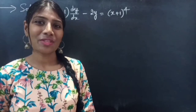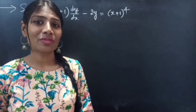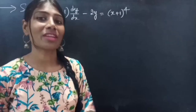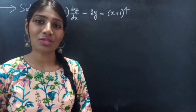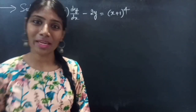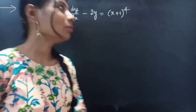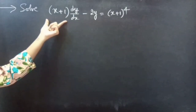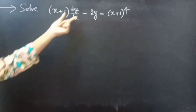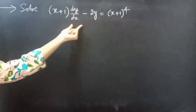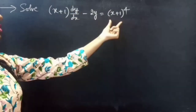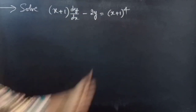Hello everyone, this is Jay Karpana. Here in this video, we are going to solve the given differential equation. So let's get going. Problem: Solve (x+1) dy/dx minus 2y equals (2x+1)^4.